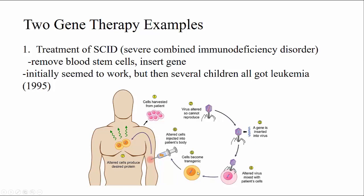Initially, it seemed that these kids were actually cured of their disorder. However, a number of years later, several of the children all got a specific type of leukemia. The problem was that the replacement gene inserted via the virus was selectively inserting right near a gene and causing that gene to become activated. That gene turned out to be an oncogene, and it was forcing those replacement cells into cell division, which is why these children eventually got leukemia.